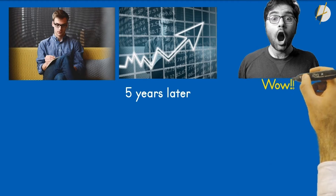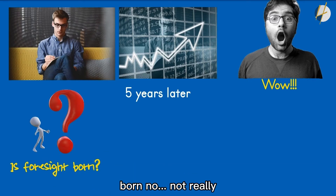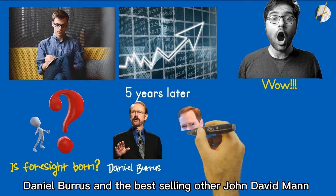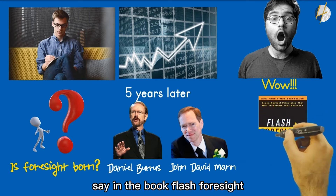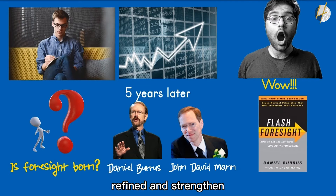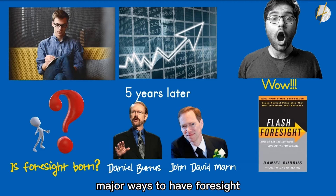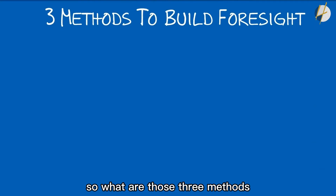At this moment, most people will say, 'Wow, you are like God — you can predict your future, you can see your future, you made the right decision.' The next question people ask is: is foresight born? Not really. According to American futurist Daniel Burrus and best-selling author John David Mann, who specializes in business leadership and success, in the book 'Flash Foresight,' foresight is a skill that can be developed, refined, and strengthened. As long as you develop the right habits, you can predict the future more accurately. There are three major ways to develop foresight, and if you master them, you can have a more accurate perception of the future.